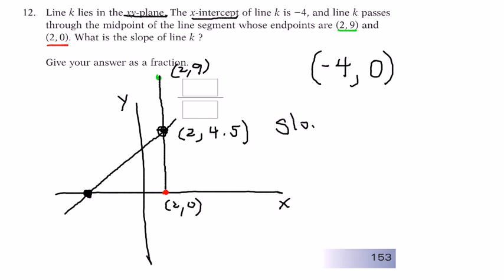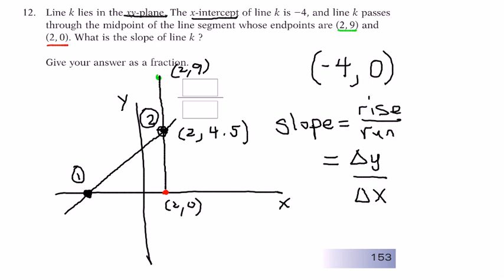And, now, slope is commonly referred to as rise over run. Maybe a little fancier way to write this is delta Y over delta X. Delta means change in. And, so, from this point, which I'll call point 1, and this point, which I'll call point 2, we have to figure out the change in X. X goes from negative 4 to 2. That makes the change in X positive 6.